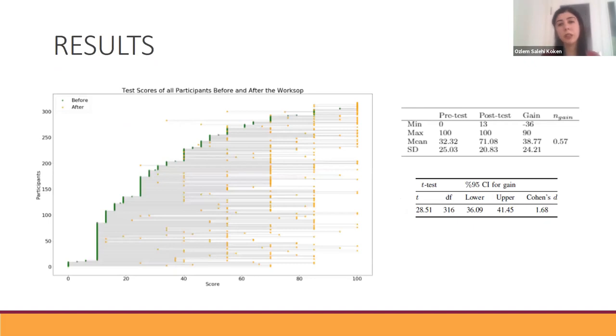Here are the results. On the left-hand side, you'll see a plot showing pre-test and post-test scores of all the participants. Greens are pre-test scores and yellows are the post-test scores. The gain score is 38, meaning the pre-test score was 32 and post-test mean score was 71. The normalized gain is calculated as 0.57, indicating a medium gain. Cohen's D effect size is calculated as 1.68, which is a large effect size.